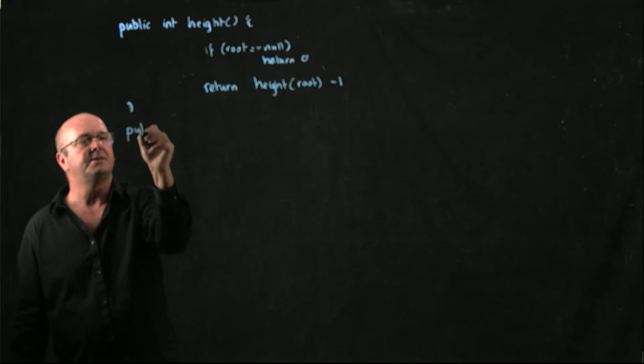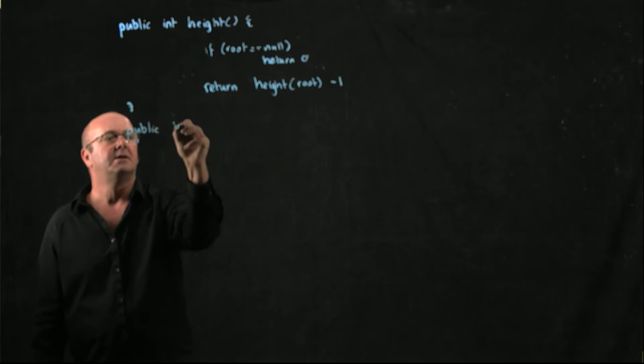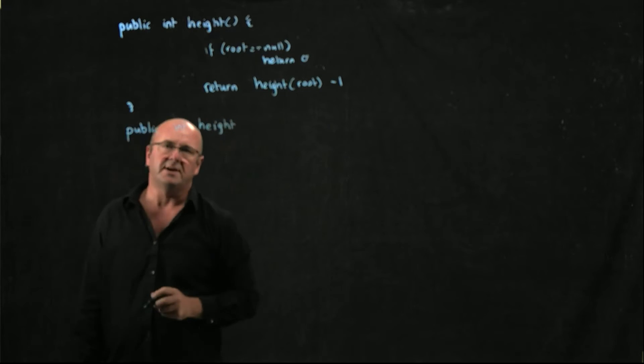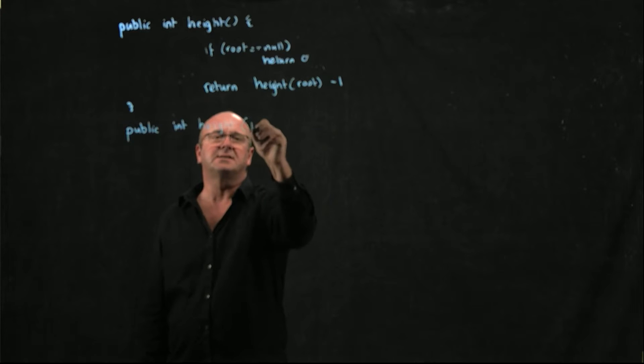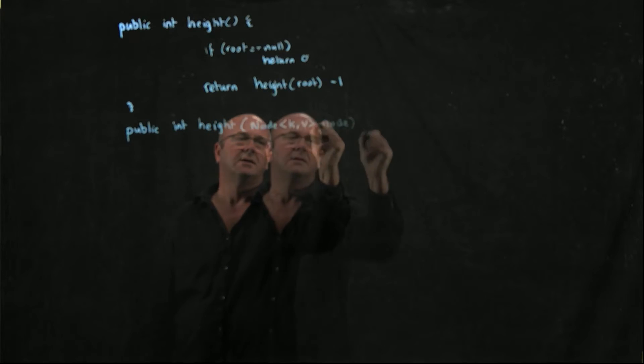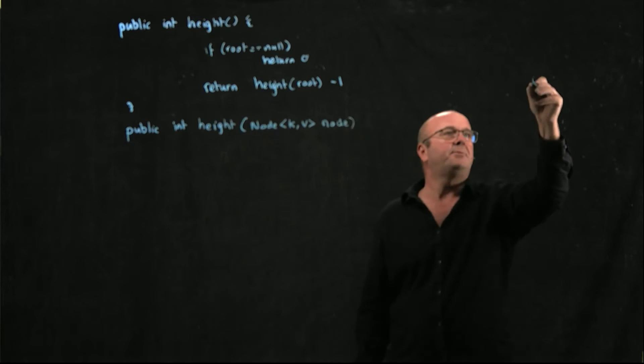So we're going to overload our height method with a height method that takes a single node kV, and for any point in the tree, the height is the longest path on either side.